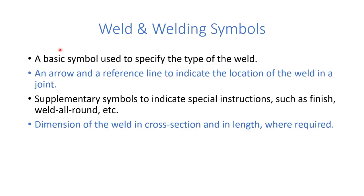Weld and welding symbols. A basic symbol used to specify the type of weld is known as a weld symbol. An arrow and a reference line are used to indicate the location of the weld in a joint. We add supplementary symbols to indicate special instructions such as finish, weld all around, etc. We also add the dimension of the weld in cross section, its length, and pitch where required.